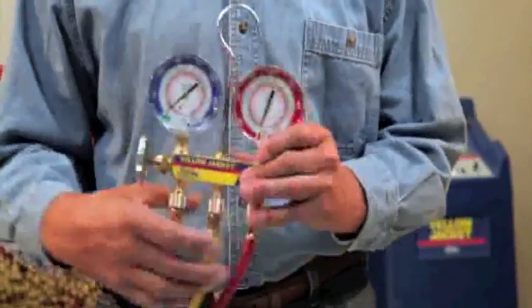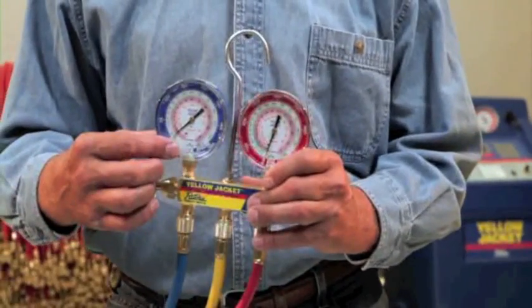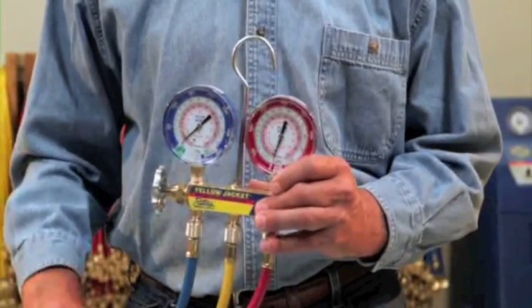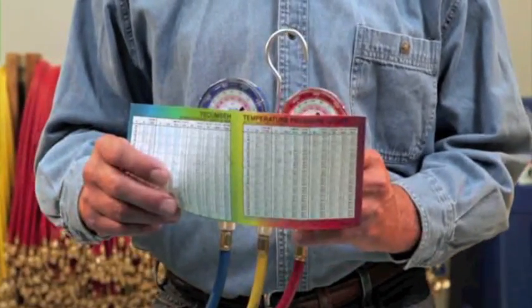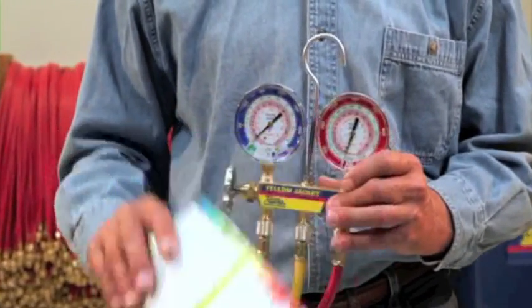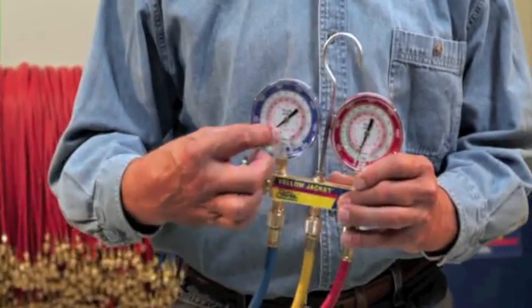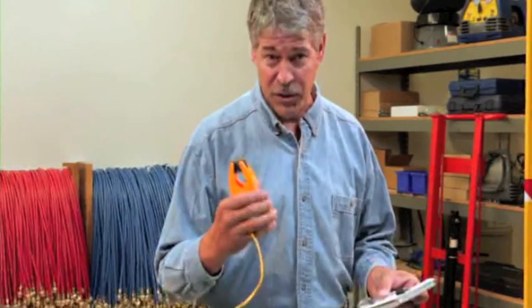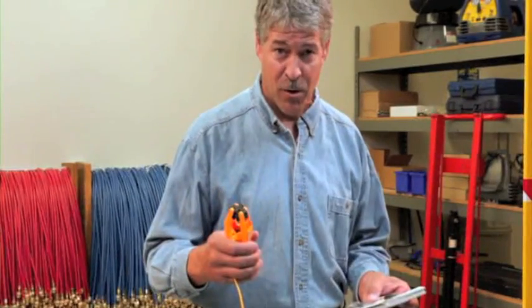Conversely, superheat is determined by using the low side gauge to measure the pressure of the evaporator. This pressure must then be converted to a vapor saturation temperature using a PT chart or the temperature scales on the gauge. This temperature is then subtracted from the actual suction line temperature measured using an accurate temperature probe. The result is the superheat value.